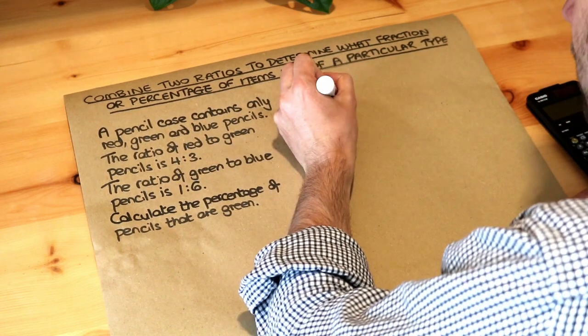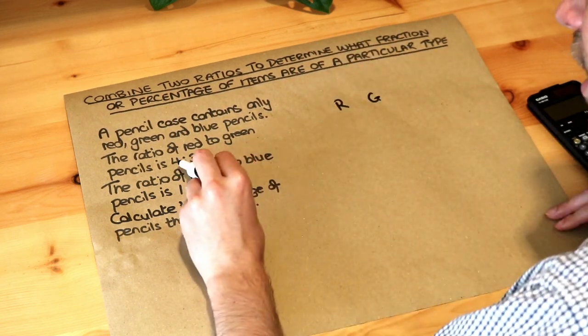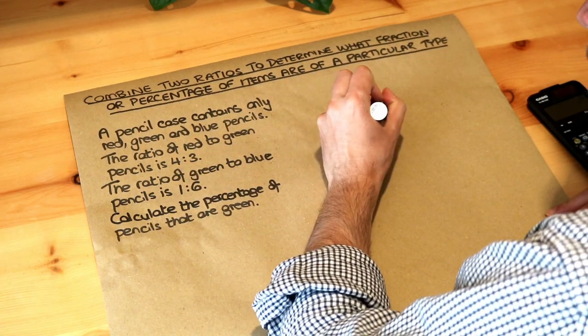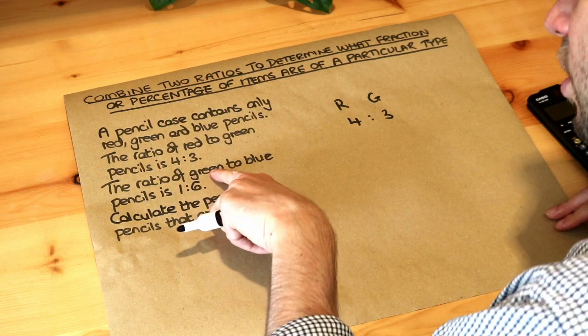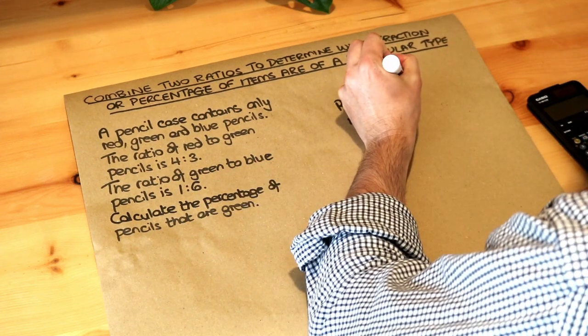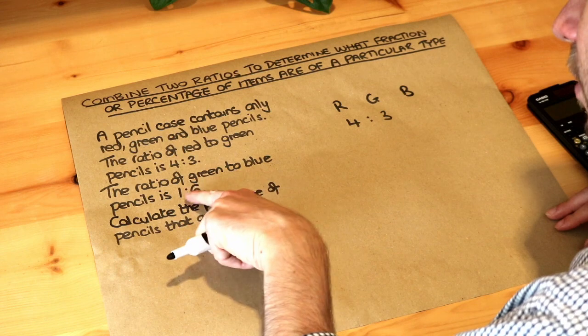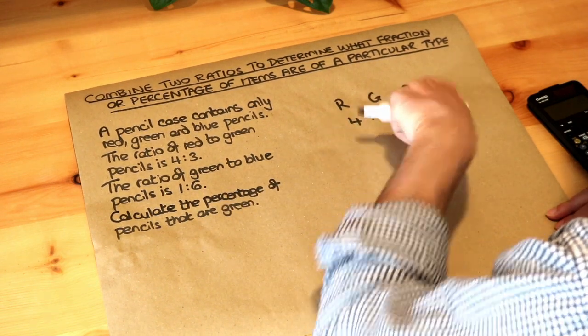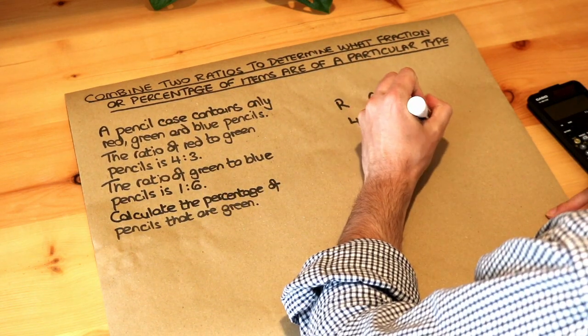The ratio of red to green is—we'll just use R for red, G for green. Red to green is four to three, and we've also got the ratio of green to blue. So let's add blue here. The ratio of green to blue is one to six. So green to blue is one to six. I'm going to put that on a new line.